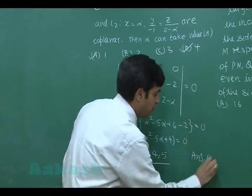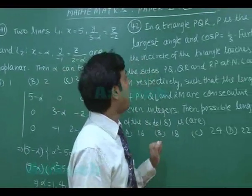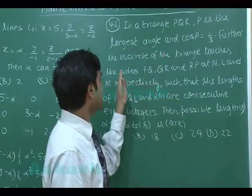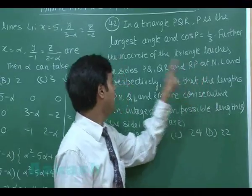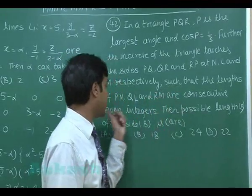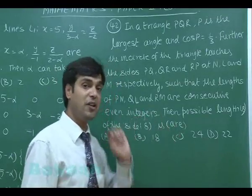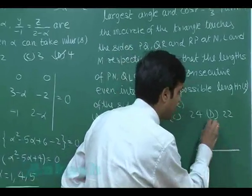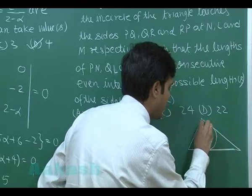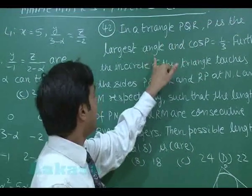Now turn for question number 42. In a triangle PQR, P is the largest angle and cos P = 1/3. Further, the incircle of the triangle touches the sides PQ, QR, and RP at N, L, and M respectively, such that the lengths of PN, QL, and RM are consecutive even integers. Then possible lengths of the sides are given in four options. Let us draw the triangle first.